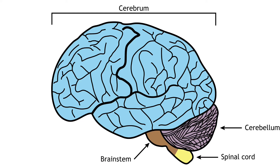The brain is comprised of the cerebrum, cerebellum, and brainstem. The cerebrum is the most prominent region of the brain. It is divided into left and right hemispheres. The hemispheres have many of the same functions — for example, each perceives touch on one side of the body. But some functions demonstrate laterality, meaning they are primarily controlled on one side of the brain.